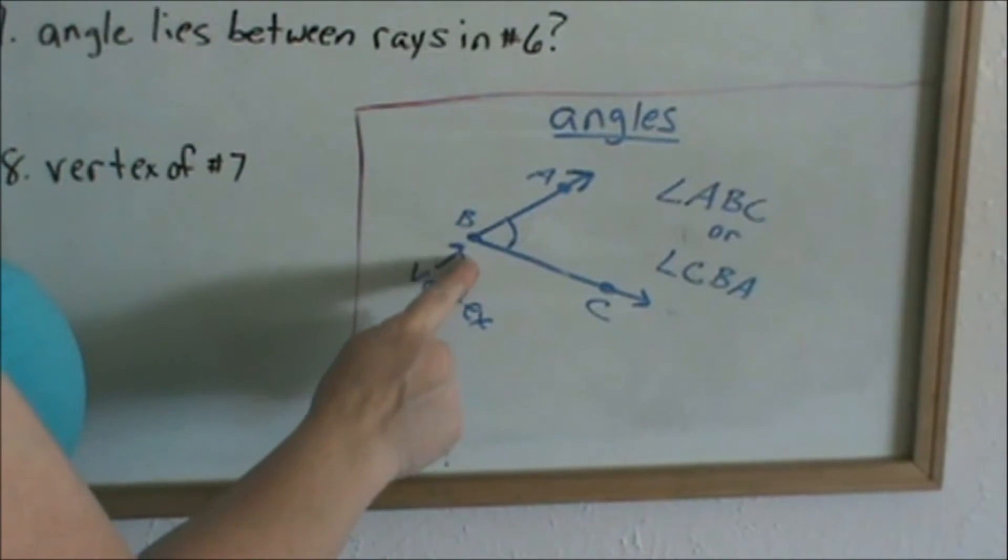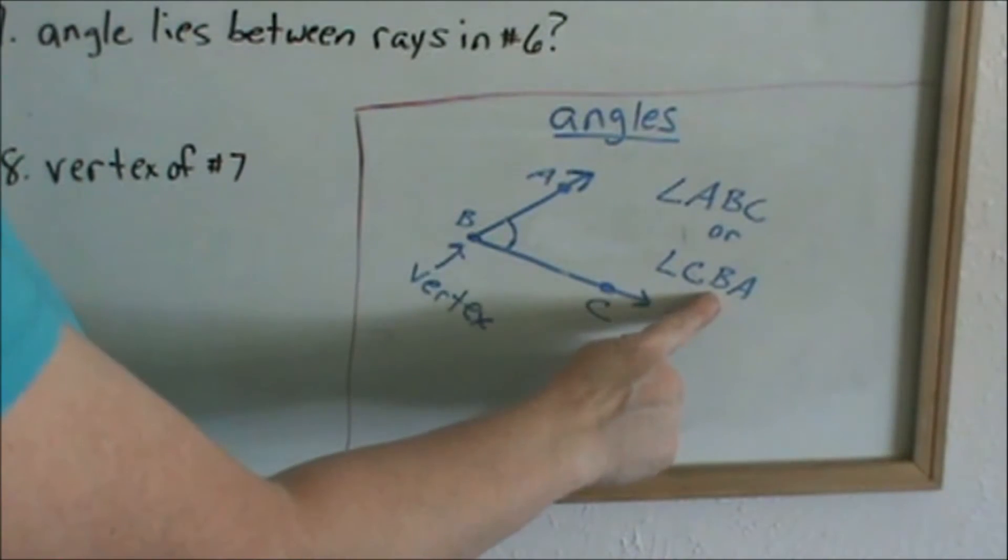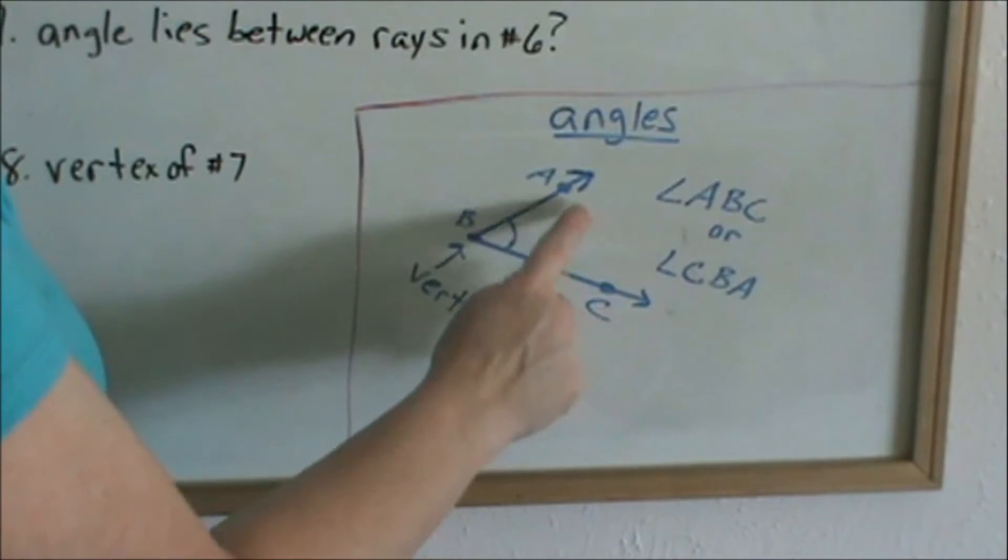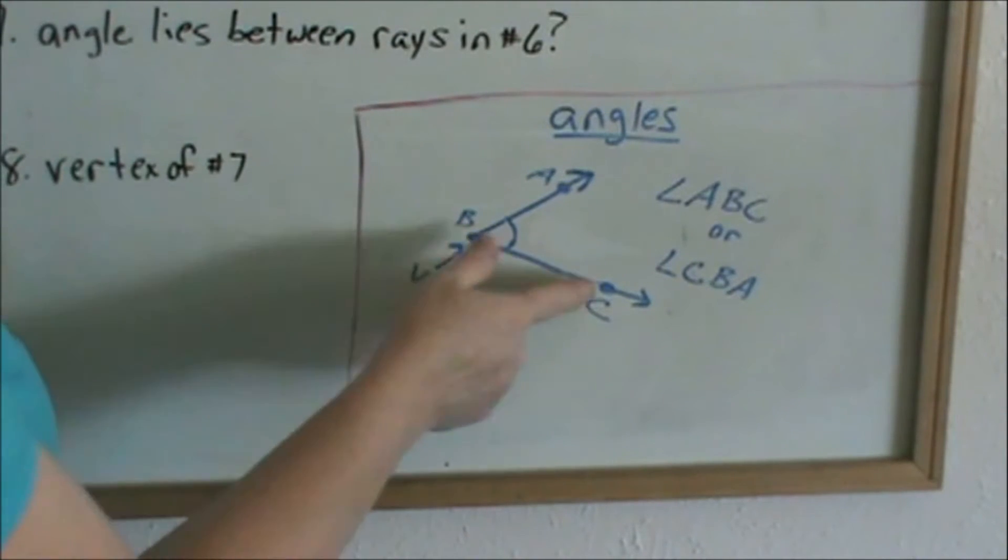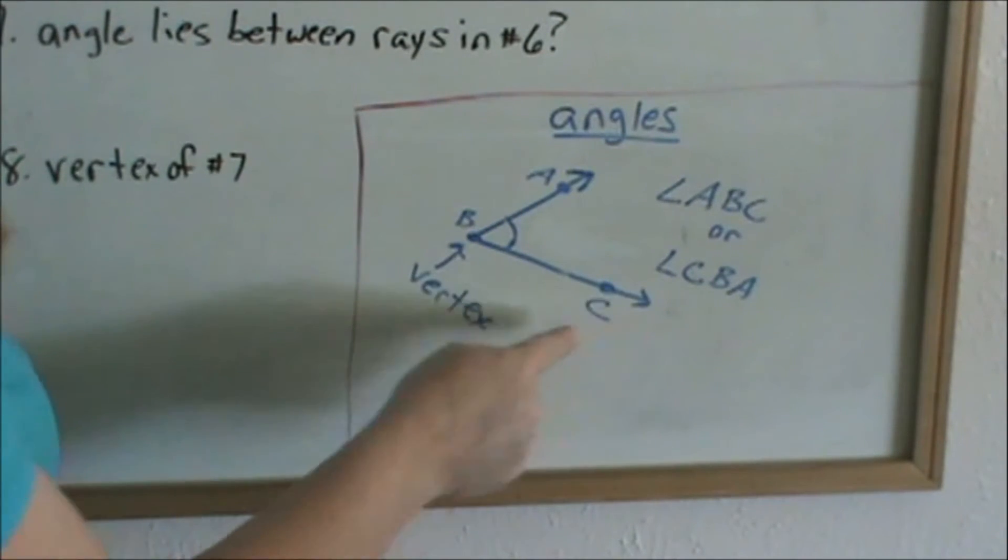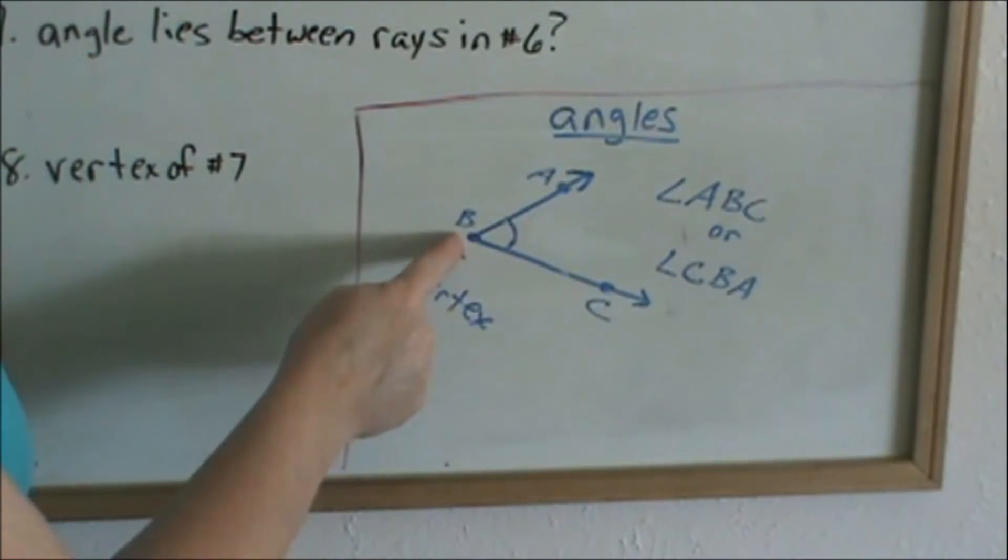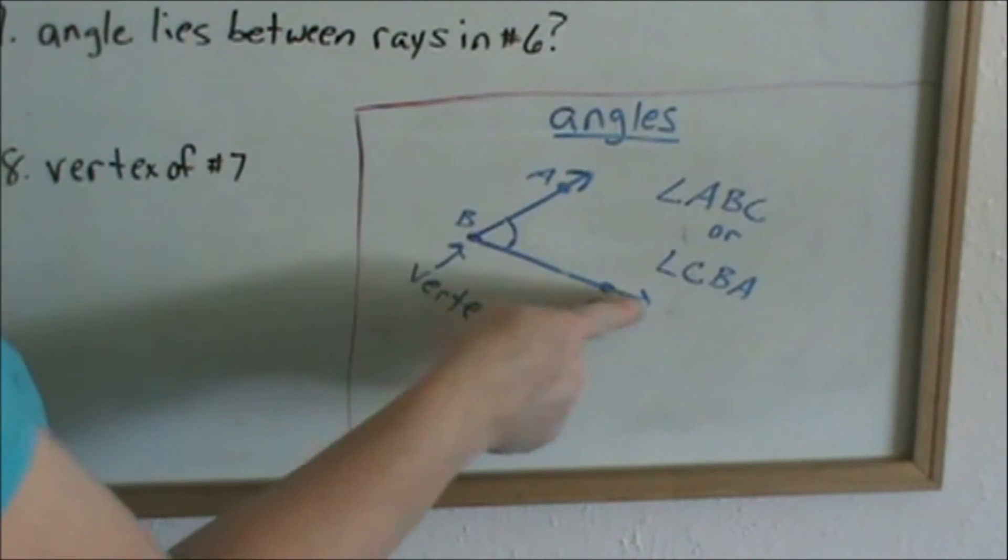The main important thing is that the vertex is always, always the center letter. B is the vertex, so B is the middle letter. The A and the C can be in either order, but if you follow it with your fingers, A, B, C, then you've made that angle, or C, B, A. Again, the main thing is the vertex has to be the middle letter, always, always.